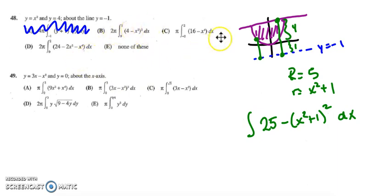And as I look up here at my solutions, I know that they have foiled out this guy to get, let's see, 25 minus x to the 4th minus 2x squared minus 1. And I have distributed this negative to all those terms.